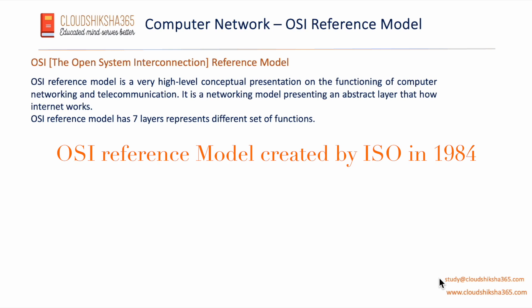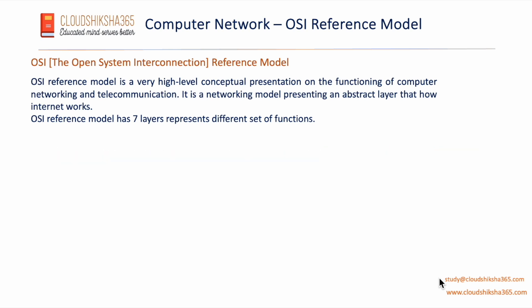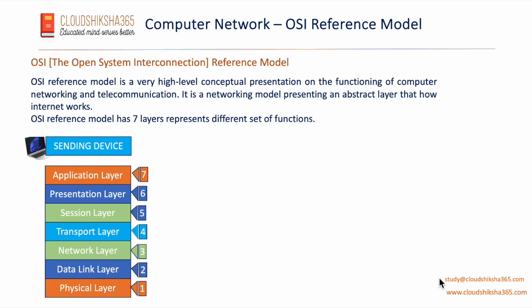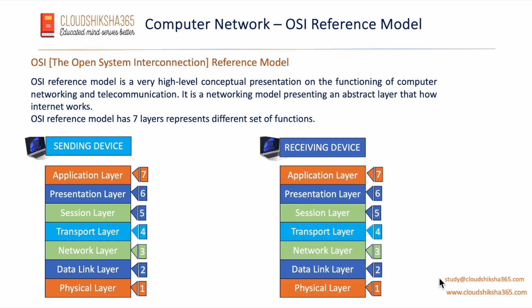This is a reference framework which explains how there are underlying abstract layers that send data to each other. The OSI reference model has seven layers, and it depicts how a sending device and a receiving device communicate with each other.